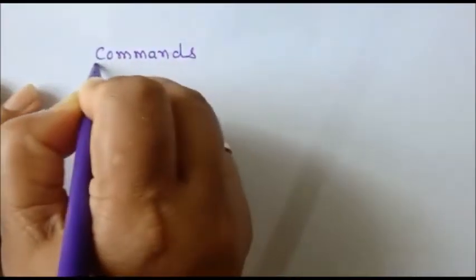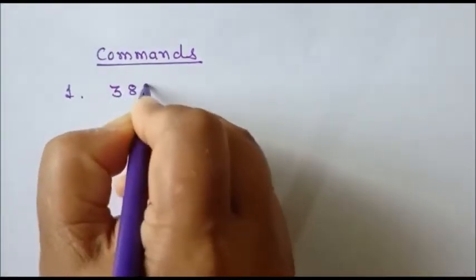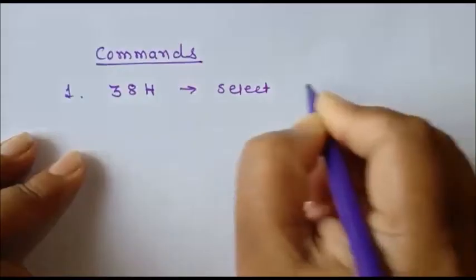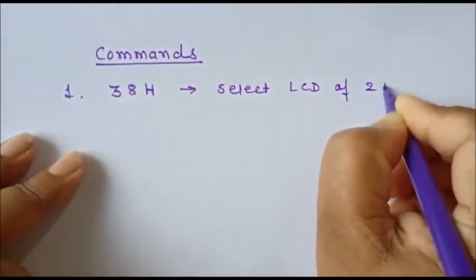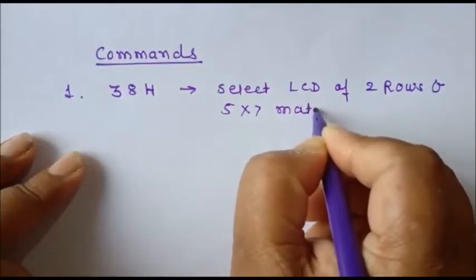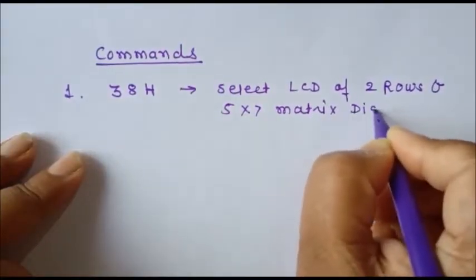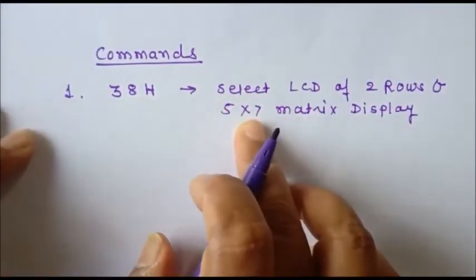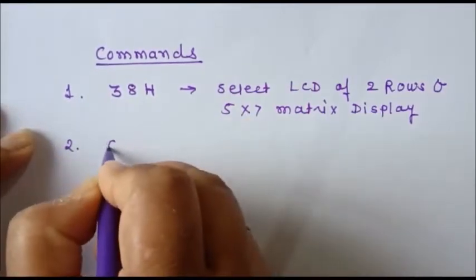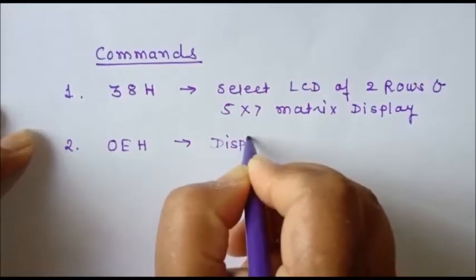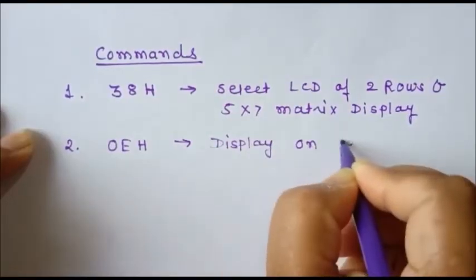Several commands are available for LCD, but generally we use three. The first command is 38h, which is used to select LCD with two rows and a 5 by 7 dot matrix display — meaning each character is displayed using a 5 by 7 dot matrix pattern. The second command commonly used is 0Eh, which is used to turn the display on and the cursor on.